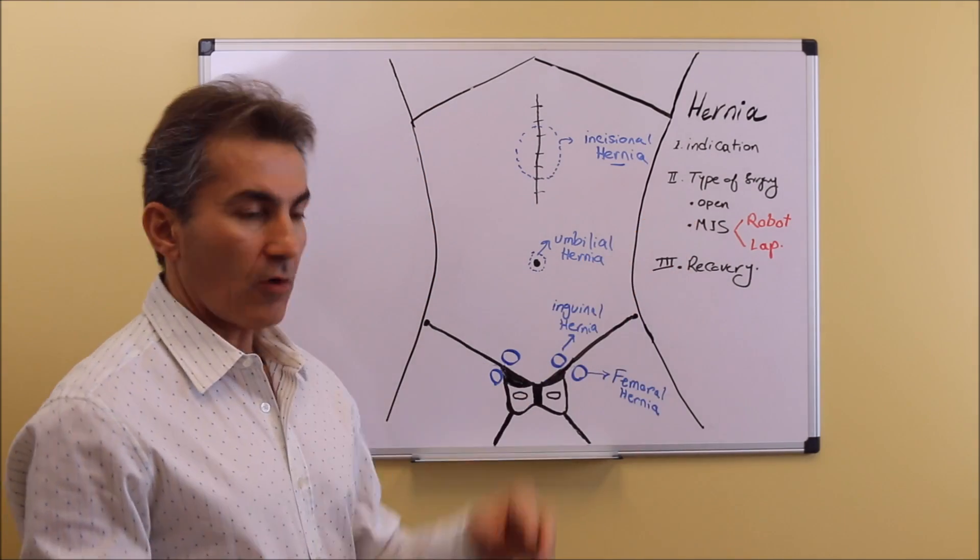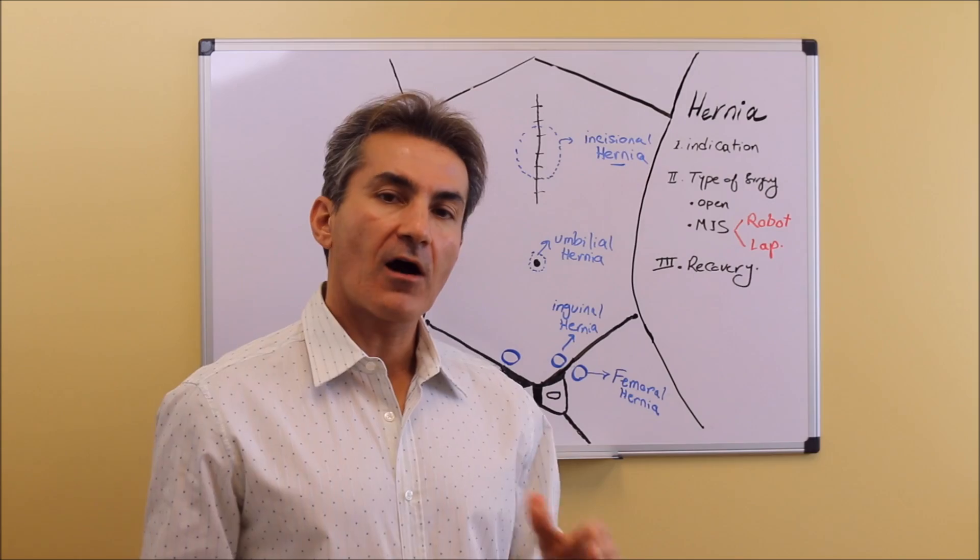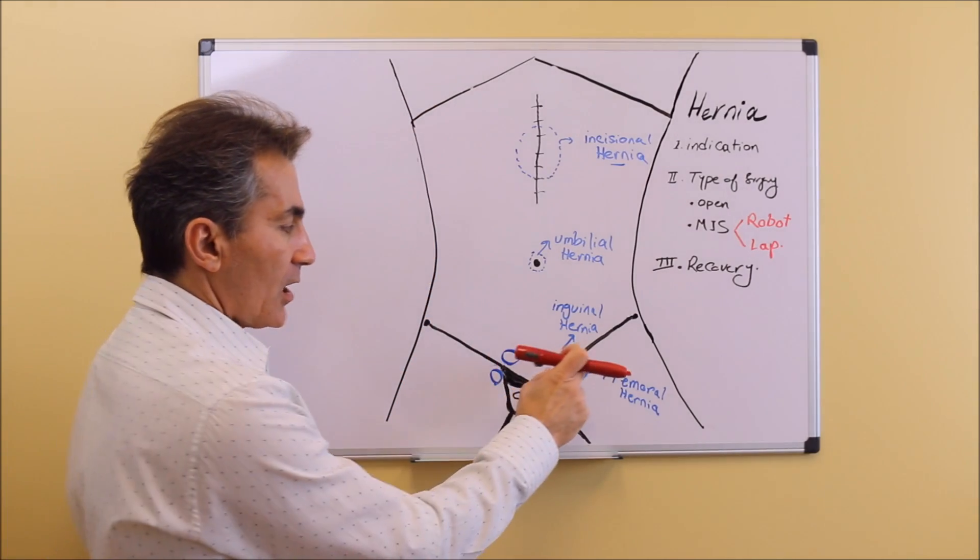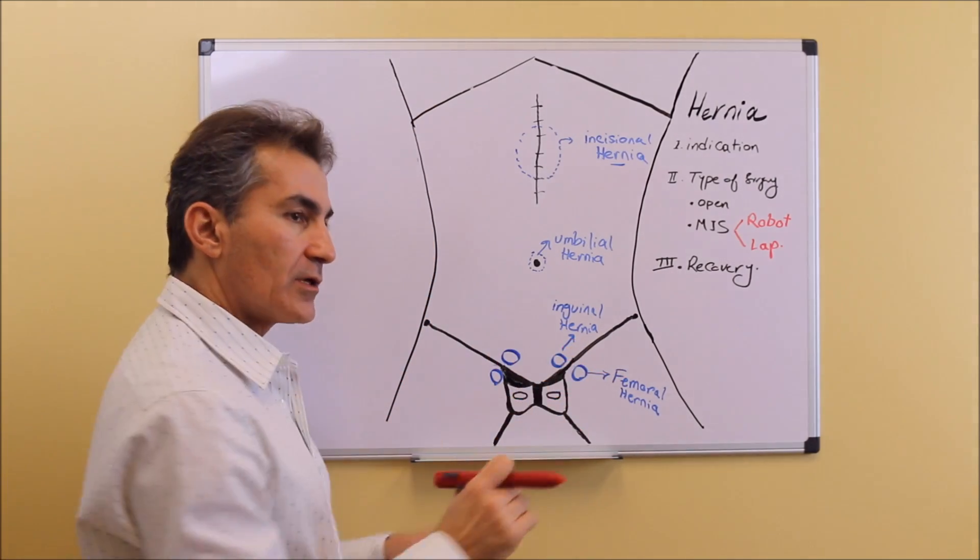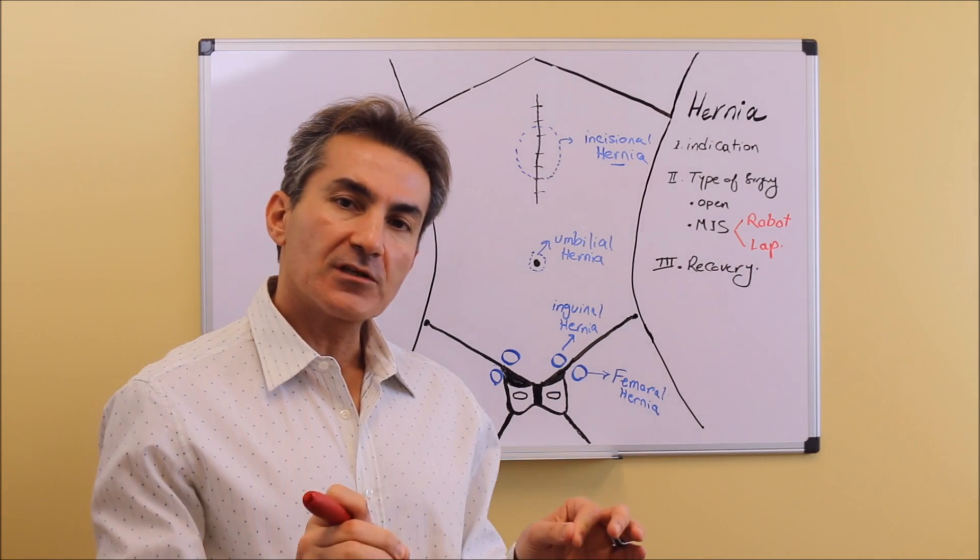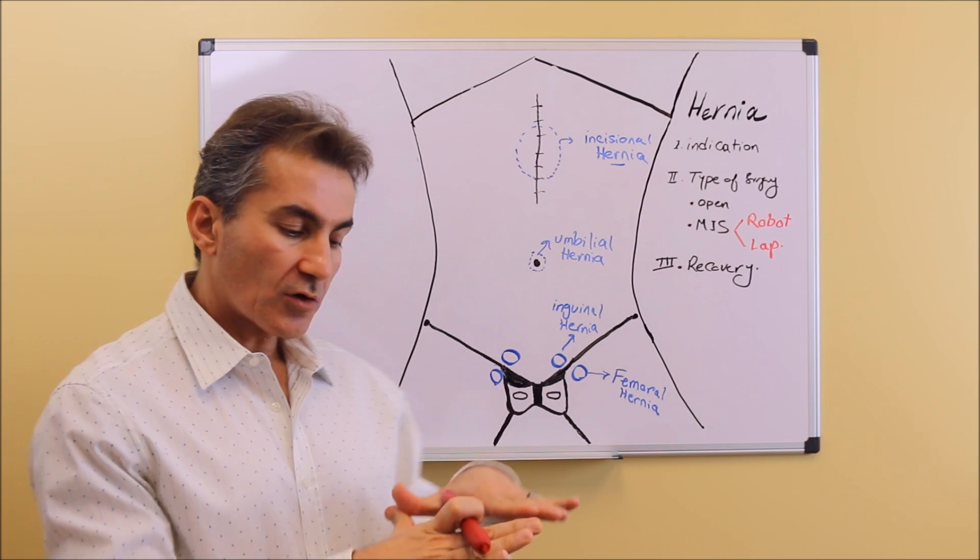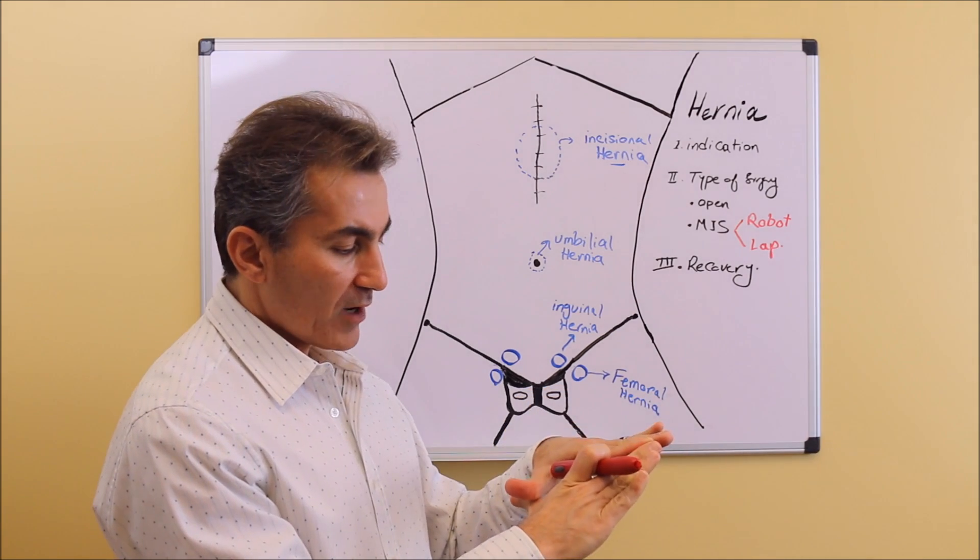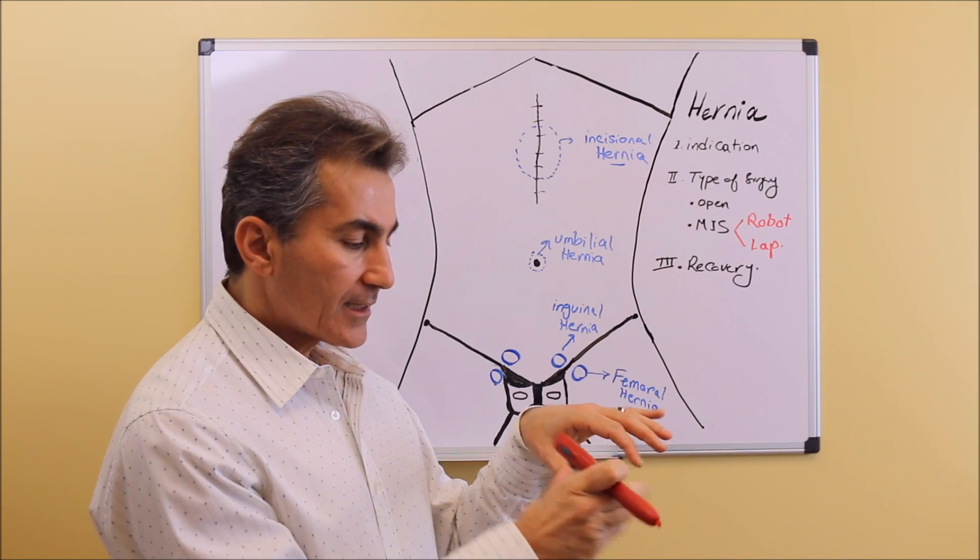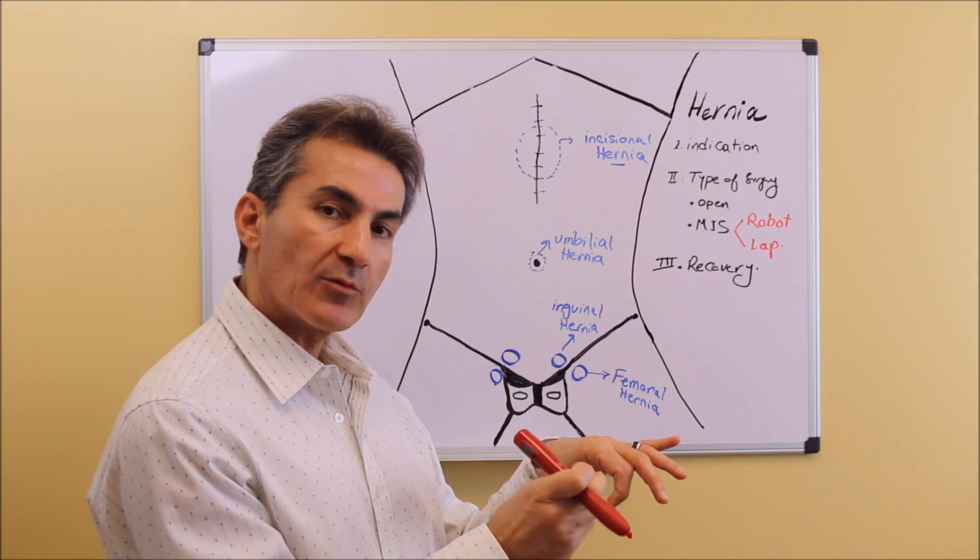Let's talk about open surgery. Open surgery involves making an incision on top of the hernia, going through the skin, the soft tissue, and going over the top of the weakness of the muscle. I look at the defect with my eyes and see the hole.